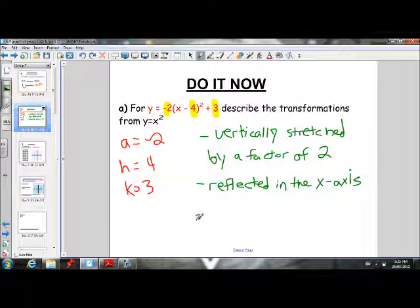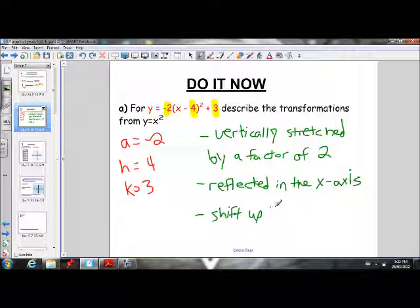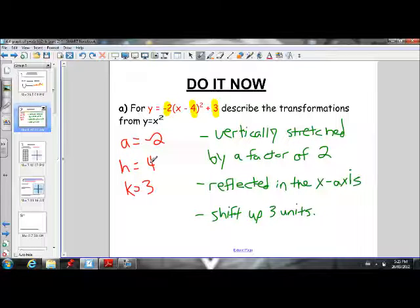Our k value is positive 3. So we'll do k next. When k is positive, the parabola moves up. So our parabola is going to shift up 3 units. Our h value is positive 4. When h is positive, it moves to the right. So it's going to shift up 3 units and then 4 to the right. Shift up 3, 4 right. Good. So that's the description of that parabola.